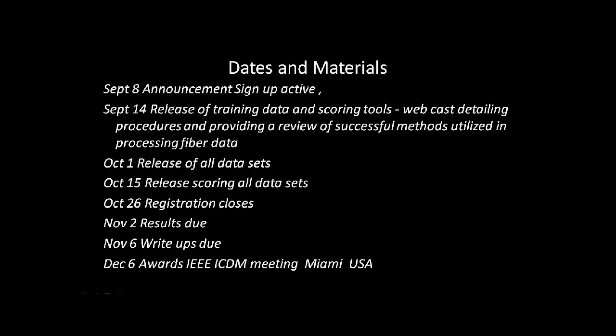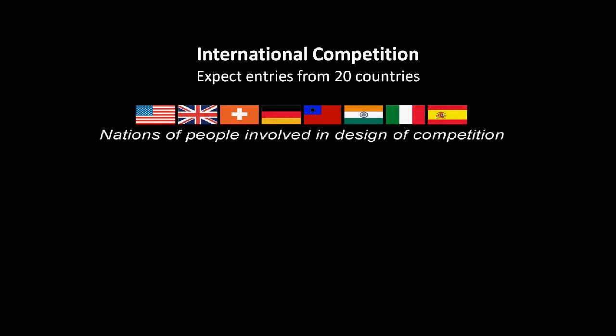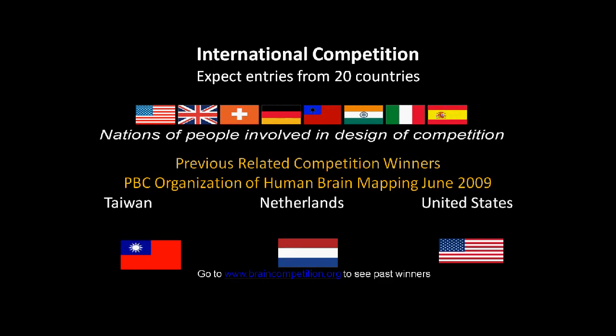The major dates are: September 14th we will release the training data, October 1st the full data sets, and results are due on November 2nd. This is an international competition and we expect entries from 20 countries. We have had previous competitions, and in the competition of June of this year at the Organization of Human Brain Mapping, we had winners from Taiwan, the Netherlands, and the United States. You can go to the Brain Competition website and see the presentations of past winners.